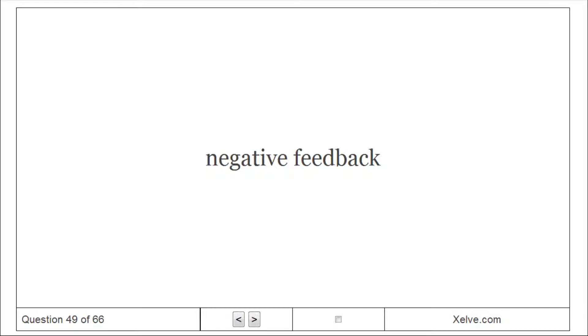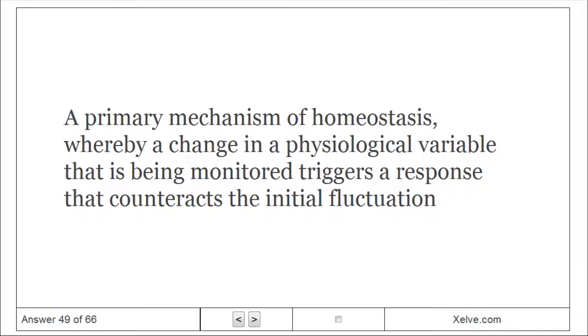Negative feedback: A primary mechanism of homeostasis, whereby a change in a physiological variable that is being monitored triggers a response that counteracts the initial fluctuation.